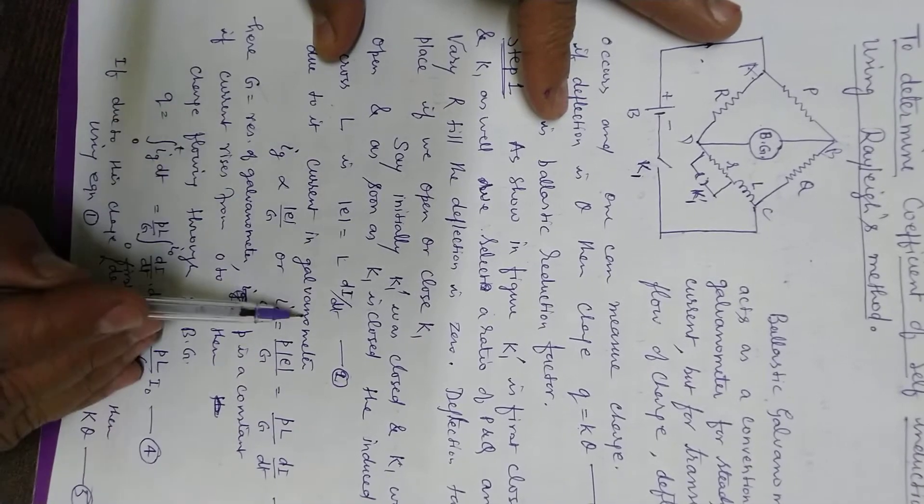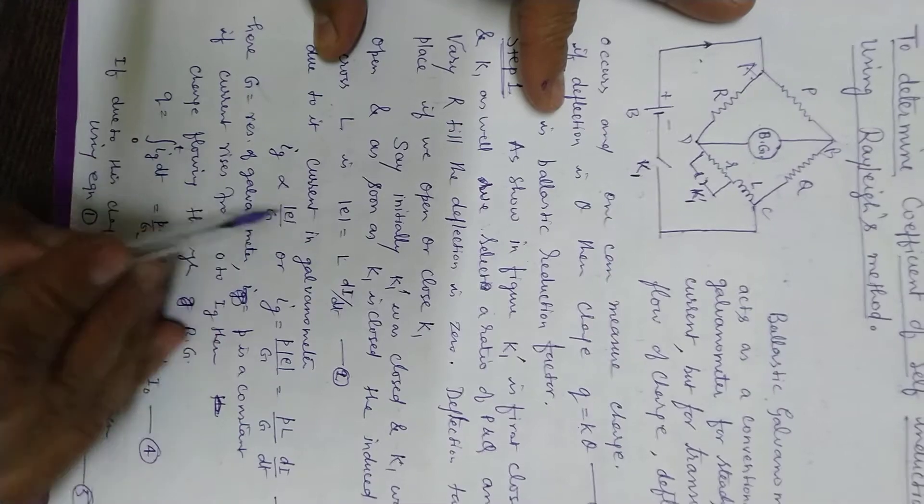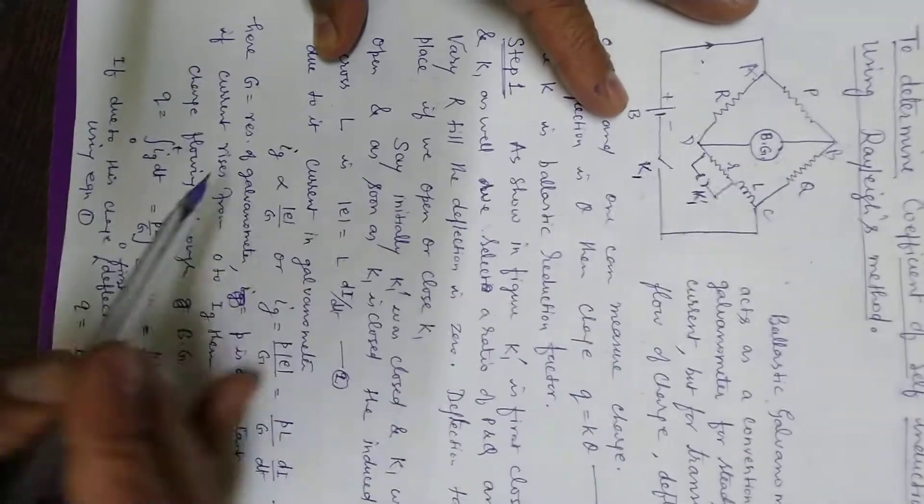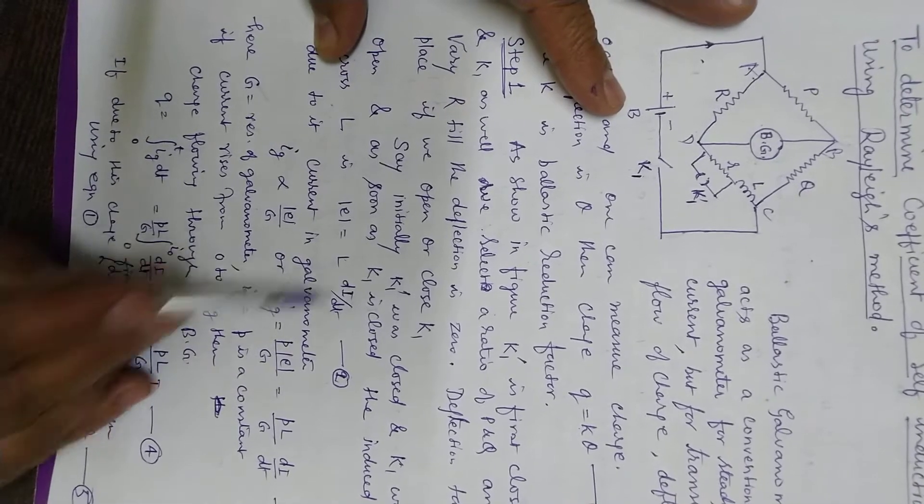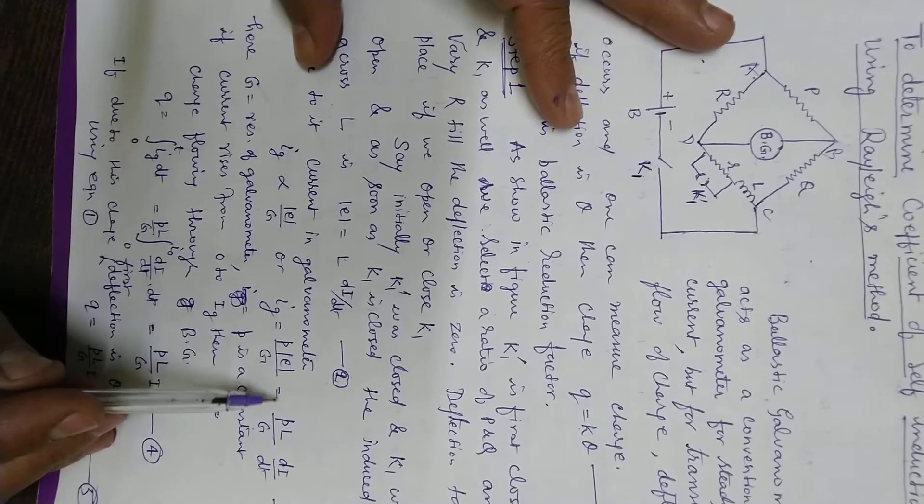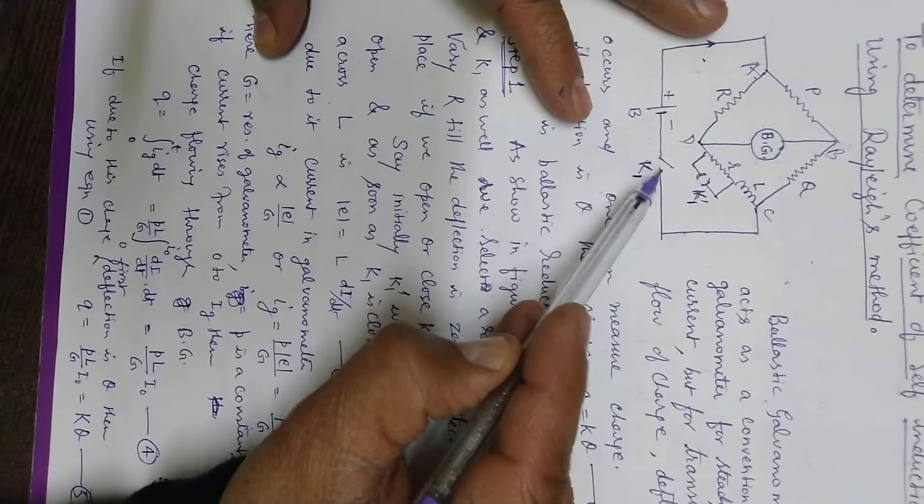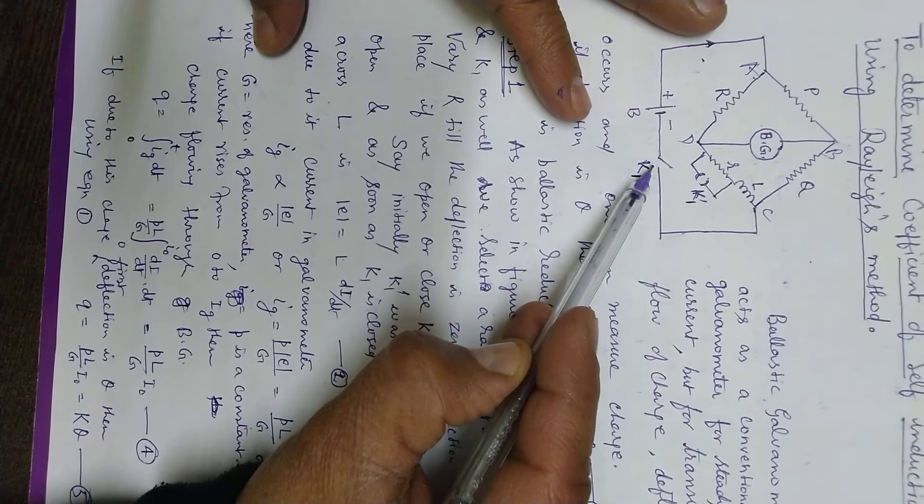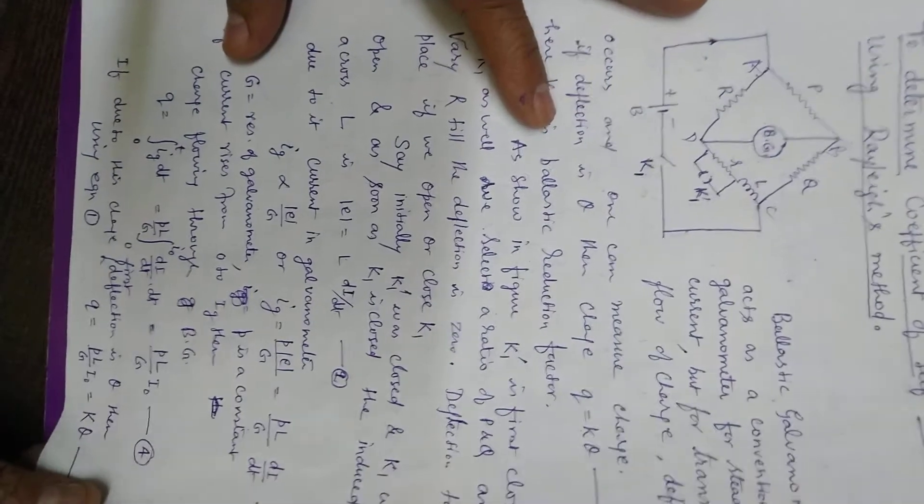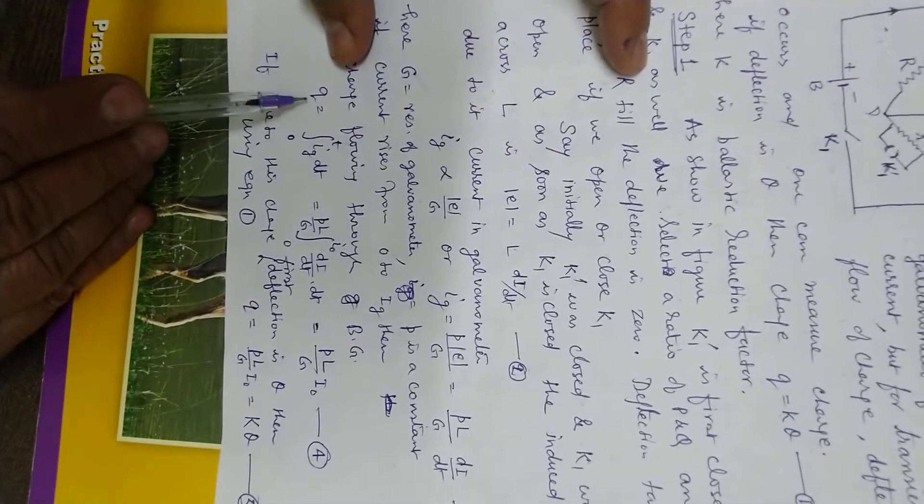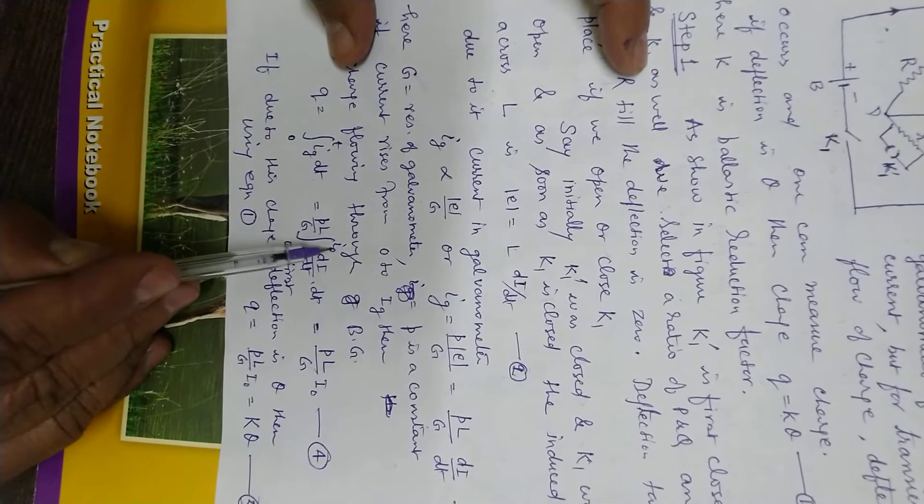Due to this voltage, the current in the galvanometer ig is proportional to the magnitude of this emf, which is p L by g times di by dt, where p is some constant of the galvanometer. When K1 is closed, the current starts increasing and a steady state will occur. Let the maximum current which rises in the circuit be i0.